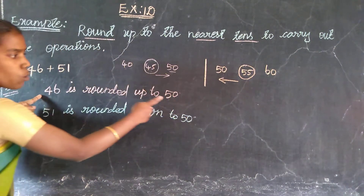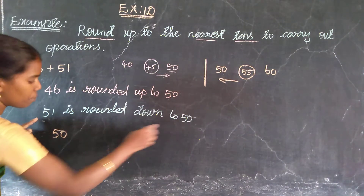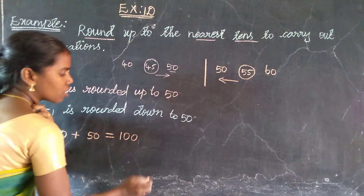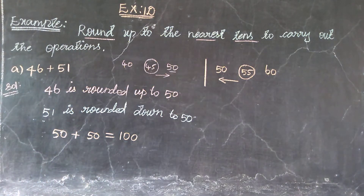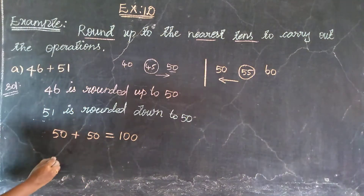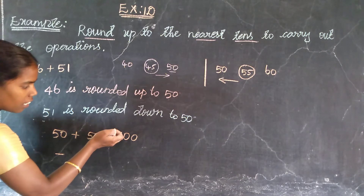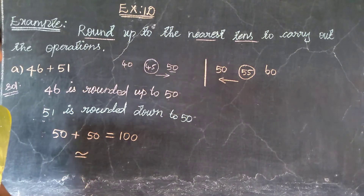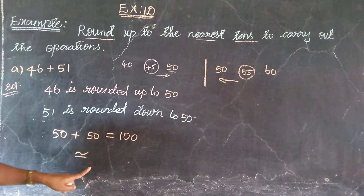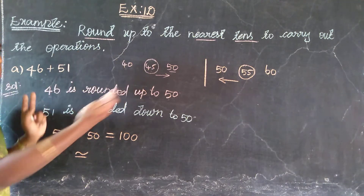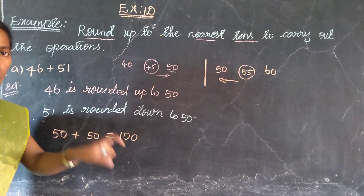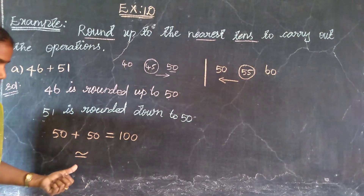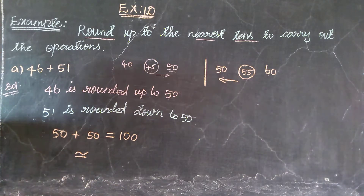So the two rounded values are: 46 rounds to 50, and 51 rounds to 50. Therefore 50 plus 50 equals 100. The symbol used here — ≈ — stands for approximately equal to. So 46 + 51 is approximately equal to 100.